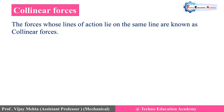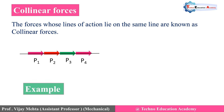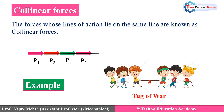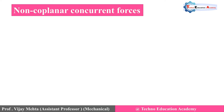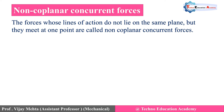The next type is collinear forces. The forces whose line of action lies on the same line are known as collinear forces. Here you can see that forces P1, P2, P3, and P4 have their line of action on the same line, so they are called collinear forces. An example is tug of war, where the forces are acting on the same line.